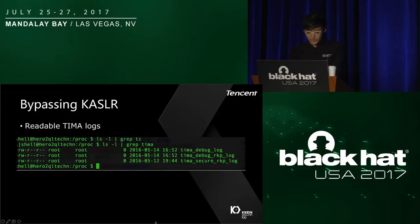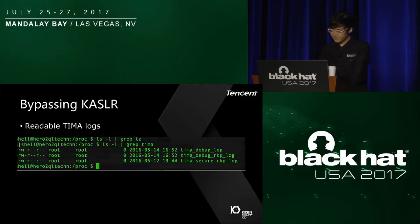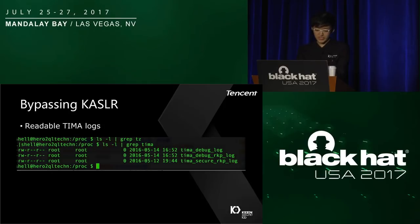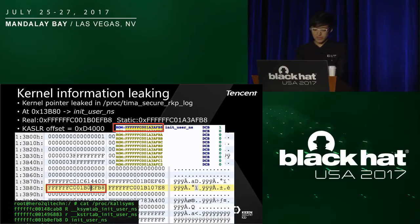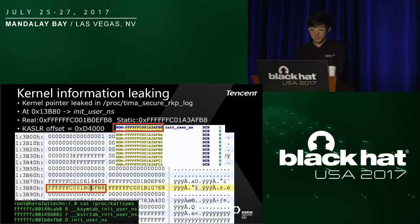How to bypass KASLR? I found a very easy way. For Samsung devices, you may find some log files in procfs. One of them is the secure RKP log. I found some kernel pointers leaked in this file — by simply dumping this file, you find at offset 0x13B80 a kernel pointer leaked, which is init_user_ns. It's a global variable representing the init process's user namespace. With this leaked information, we can calculate the loading offset of the Linux kernel at runtime and bypass KASLR.